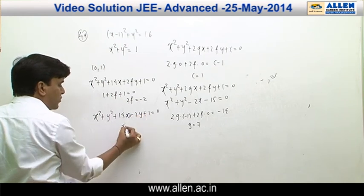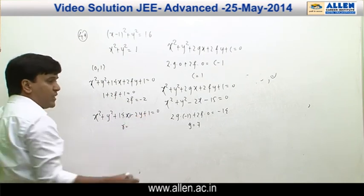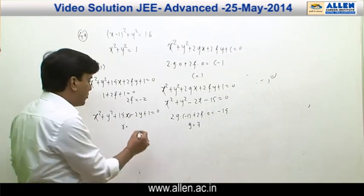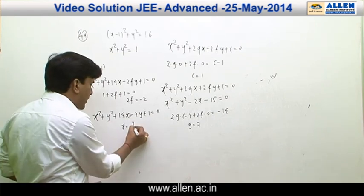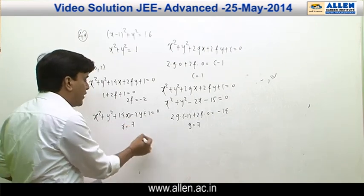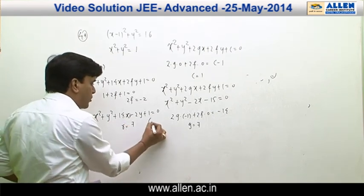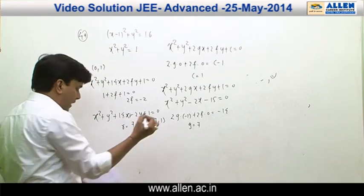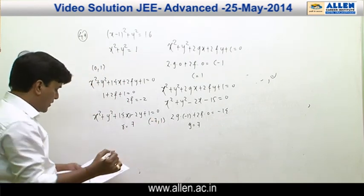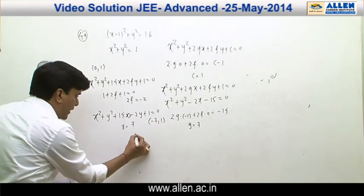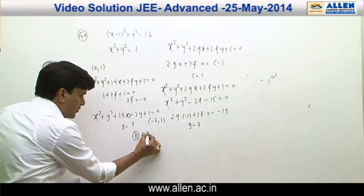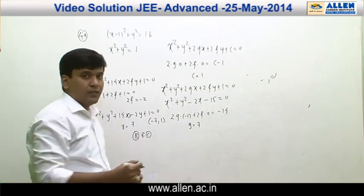The radius is √(g² + f² − c) = √(49 + 1 − 1) = 7, and the center is (−7, 1). Hence the correct answers are B and C.